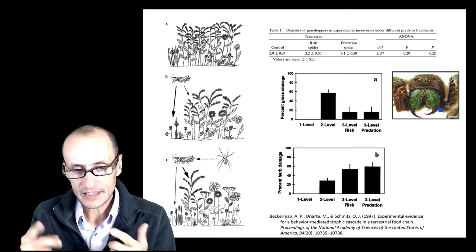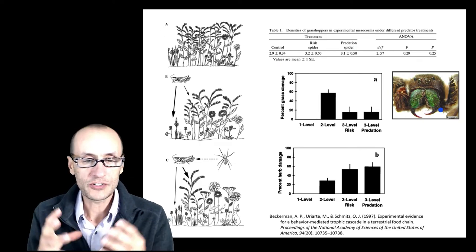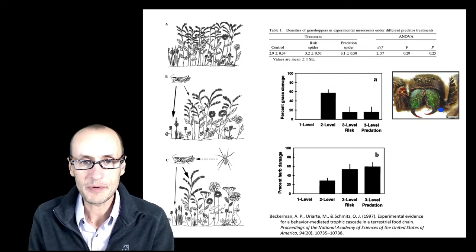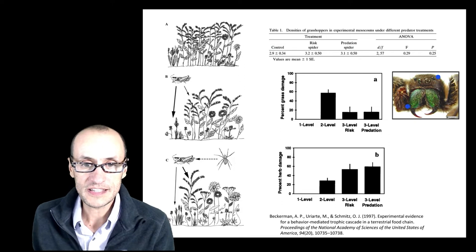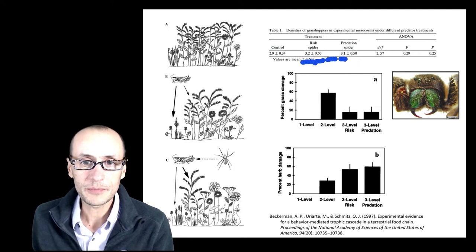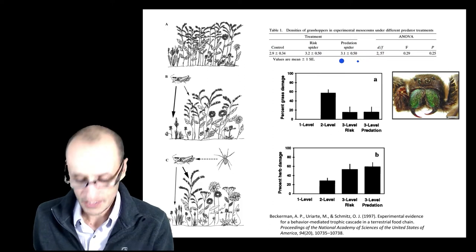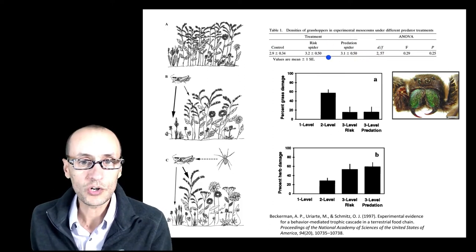And they, in later experiments, they actually also started gluing the mandibles and had basically the same effects. And what he demonstrates is that this manipulation here of the mandibles actually doesn't have any effect on the mortality of the spiders, the so-called risk spiders.